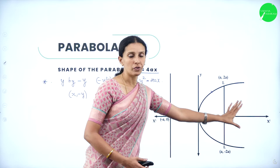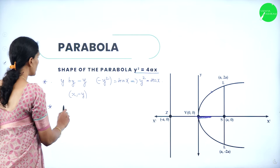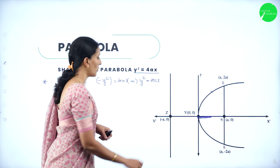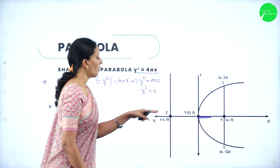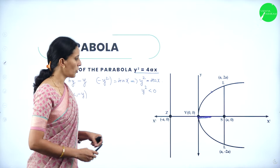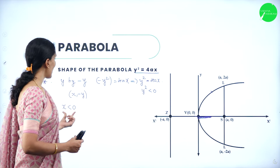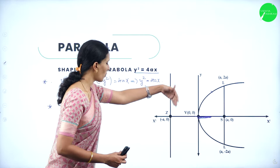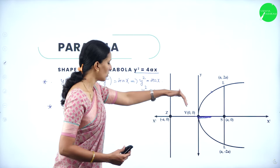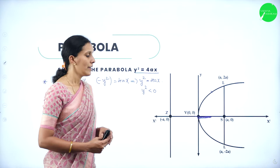If x is less than 0, then y² becomes less than 0, which has no real solution. This shows the parabola has no part to the left of the origin — the part of the curve to the left of the y-axis has no real solution.